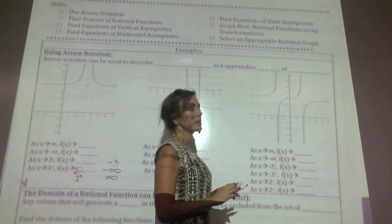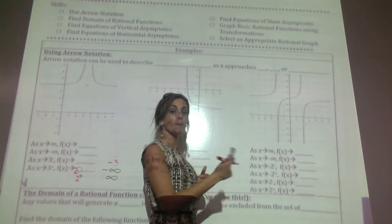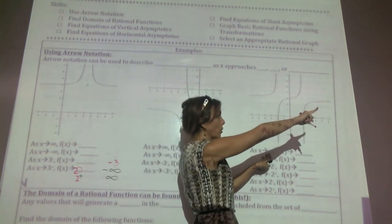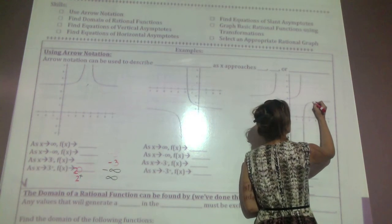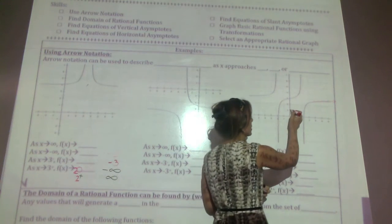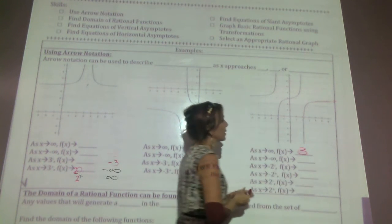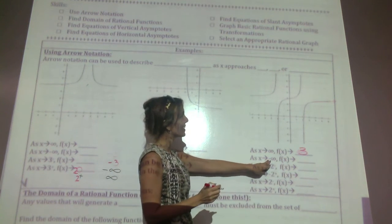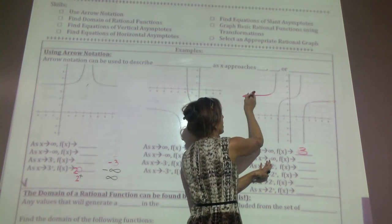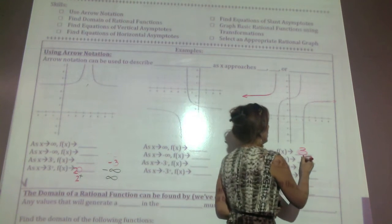The last graph we'll discuss: as x approaches positive infinity, we're totally to the right of the graph. F of x looks like it's approaching y equals 3. As x approaches negative infinity — the extreme left-hand side — you can see that the graph is flattening out at that same level: y equals 3.